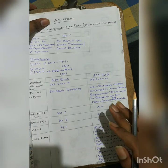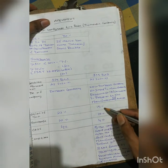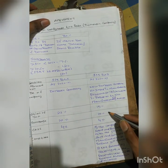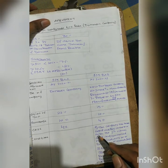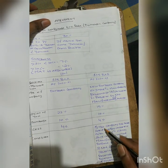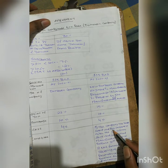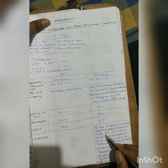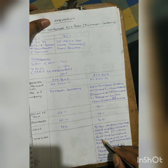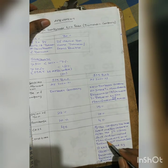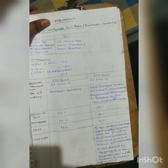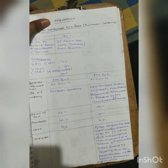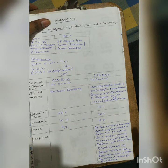Under section 115BAB, the tax rate is 15 percent, surcharge is 10 percent, and cess is 4 percent. Conditions: the company must be set up and registered on or after 1st October 2019, and must commence manufacturing on or before 31st March 2023.